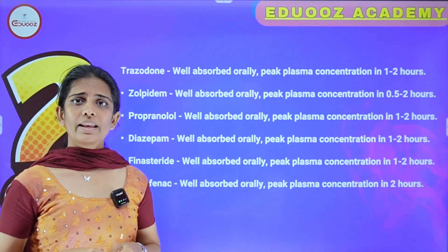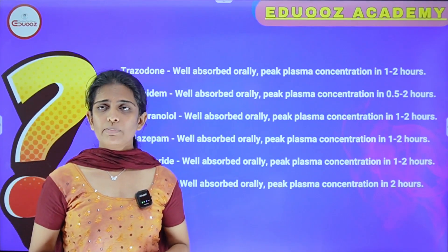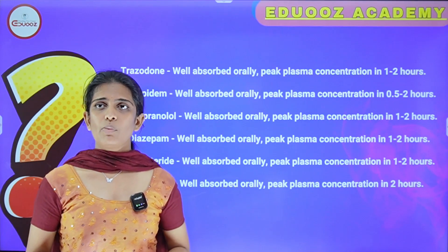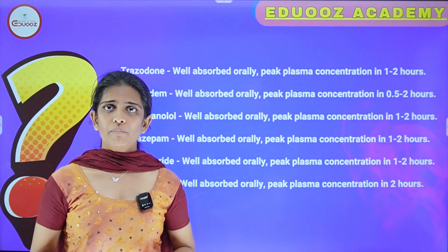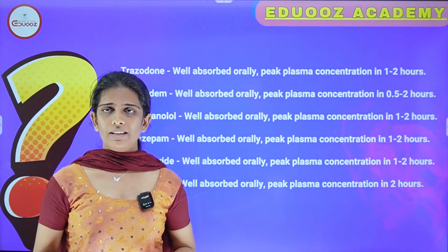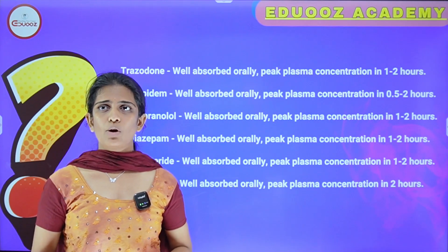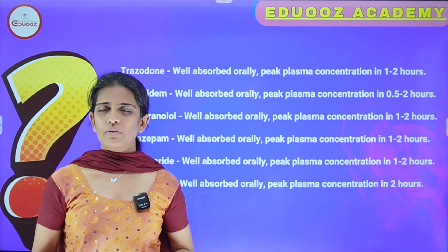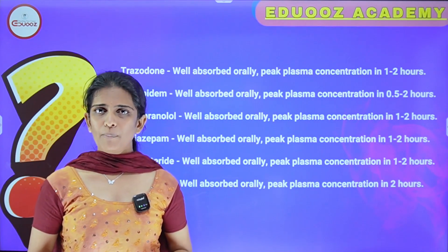Trazodone is well absorbed orally with peak plasma concentration in 1 to 2 hours. Sotalol is well absorbed orally with peak plasma concentration in 1 to 2 hours. Propranolol is well absorbed orally and the peak plasma concentration is 1 to 2 hours.